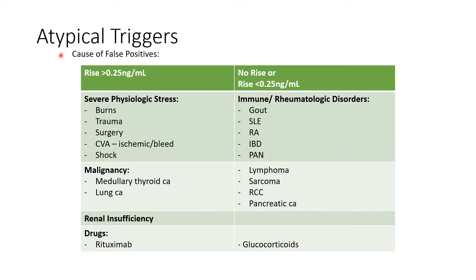These are the atypical triggers — more causes of false positives. In the absence of infection, when there is a rise of procalcitonin, it can be due to severe physiological stress like burns, trauma, surgery, infarct or bleed, shock, or malignancies like medullary thyroid carcinoma and lung carcinoma. In medullary thyroid carcinoma, the C cells — the calcitonin-producing cells — are the malignant ones; that is where procalcitonin is released from. Hence procalcitonin can be considered a tumor marker in medullary thyroid carcinoma.